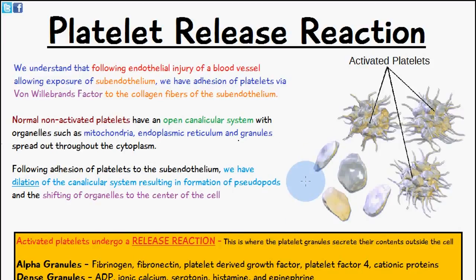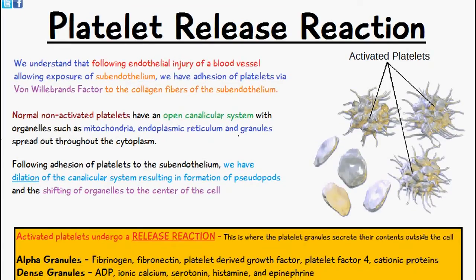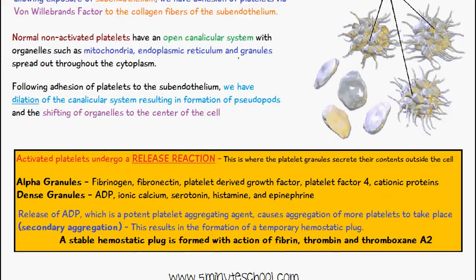When we have adhesion of these normal non-activated platelets to the subendothelium, they then become activated. They dilate this canalicular system and all of the organelles spread to the center of the cell, and they form these little spikes — known as pseudopods — which you can see here on these activated platelets. This leads to the platelet release reaction, which we're just going to talk about now.